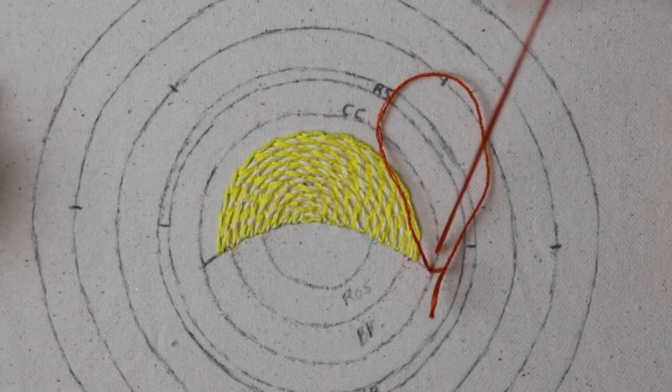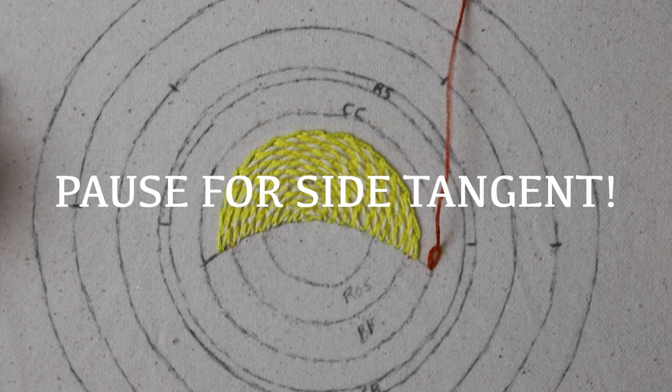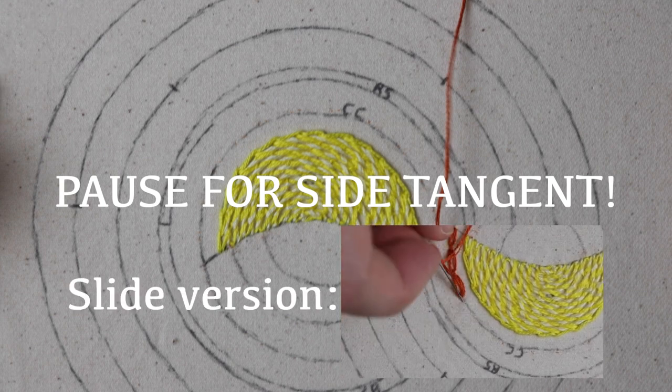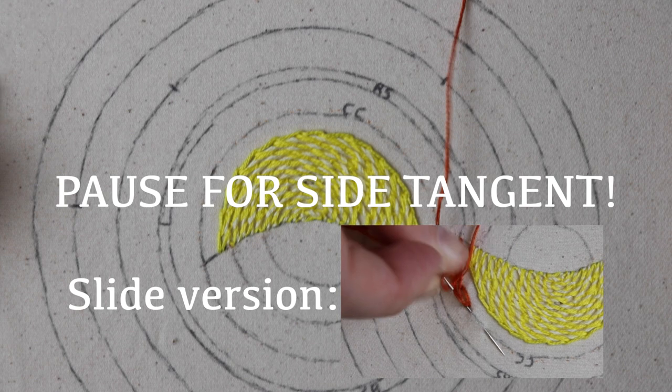From there we're gonna get into actual cable chain. Now one thing I will say is I usually teach what I call stab method of sewing, so it's all bring your needle through the fabric, bring it back through the fabric. You're going up and you're going down, you're not really going up and down at the same time if that makes sense, which I call like the slide version of sewing.